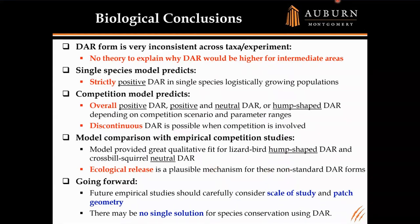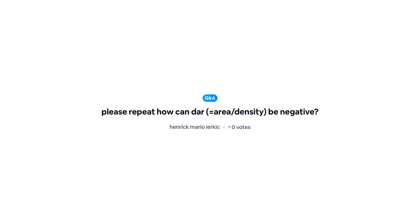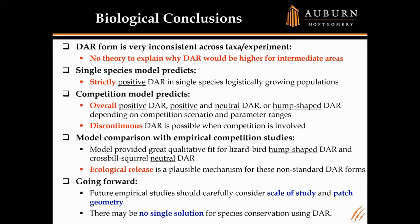Thank you, Professor Goddard. A question from Henrik: please repeat how DAR can be negative. Great question — DAR is a relationship referring to the slope. If I plot islands of increasing area against their corresponding densities, a negative relationship means as area gets bigger, density goes down. A second question from Kit: could these results be generalized to more general boundary conditions, such as Robin or nonlinear boundary conditions? Yes — we've done some of this in my research group. You lose some mathematical tractability, but that's a future direction for us.